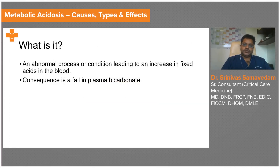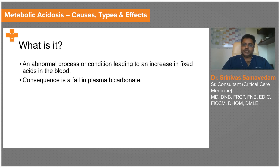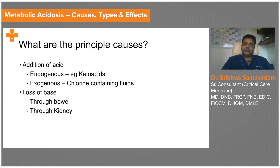Metabolic acidosis is an abnormal process or condition leading to an increase in fixed acid in the blood, with the consequence being a fall in the plasma bicarbonate. Any downward alteration in plasma bicarbonate associated with a fall in pH or an increase in fixed acids produces a condition called metabolic acidemia. This is probably one of the most common problems in intensive care practice, whether in the emergency room, operating room, during trauma resuscitation, or in the ICU.